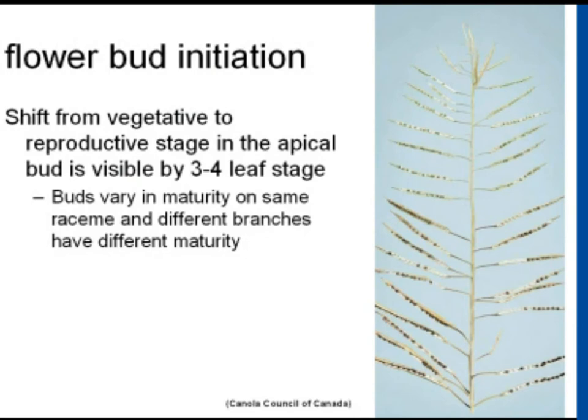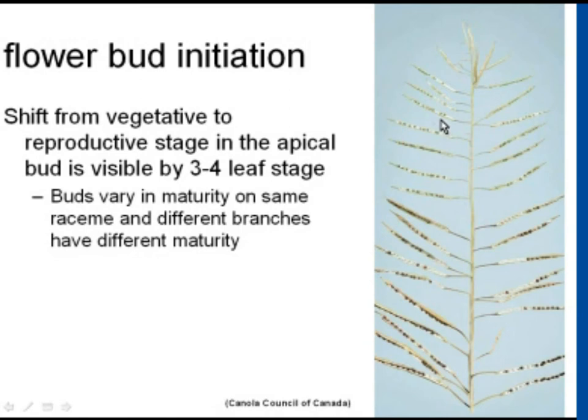In canola, it's about the three or four leaf stage when you can actually microscopically start to see some differentiation of the apex from vegetative to reproductive. With canola we know that the oldest pods — therefore the first flowers — are at the bottom of the raceme, and as you go up the raceme the flowers are younger, later pods, and so on.